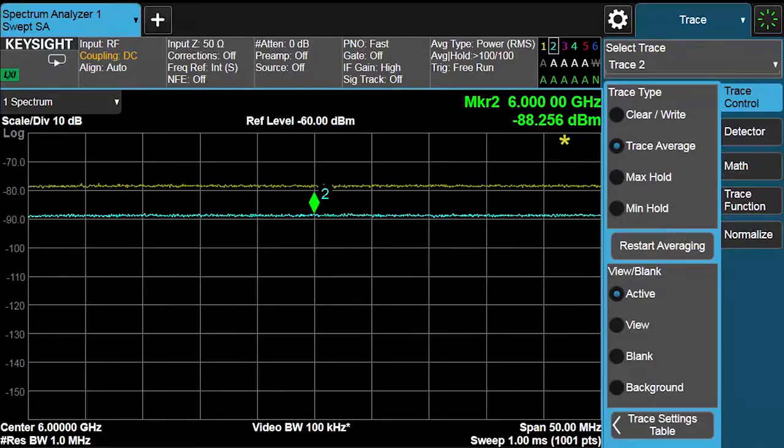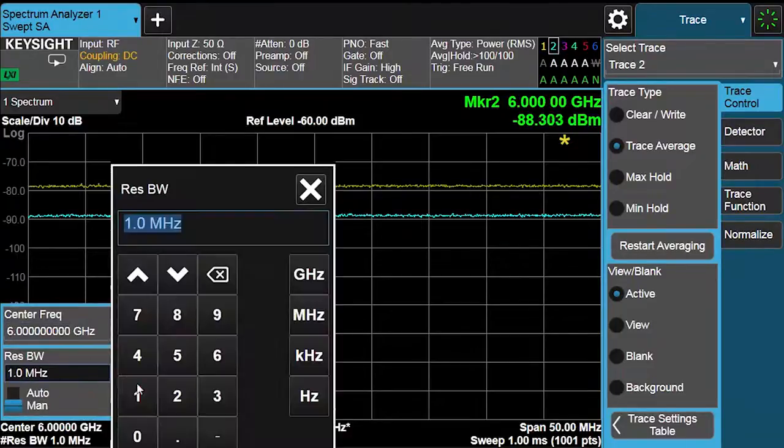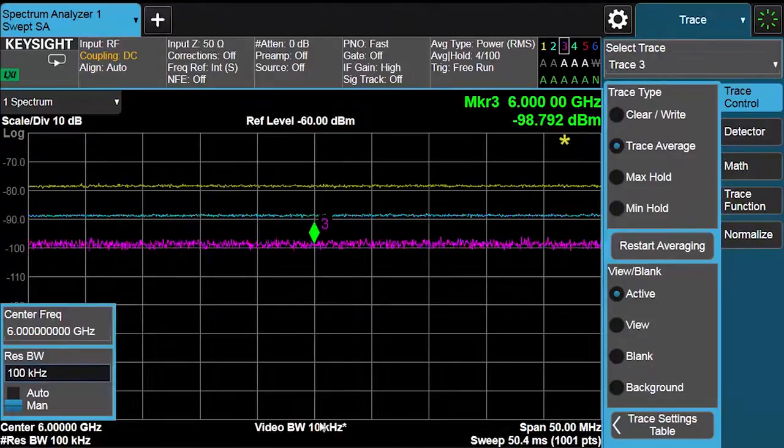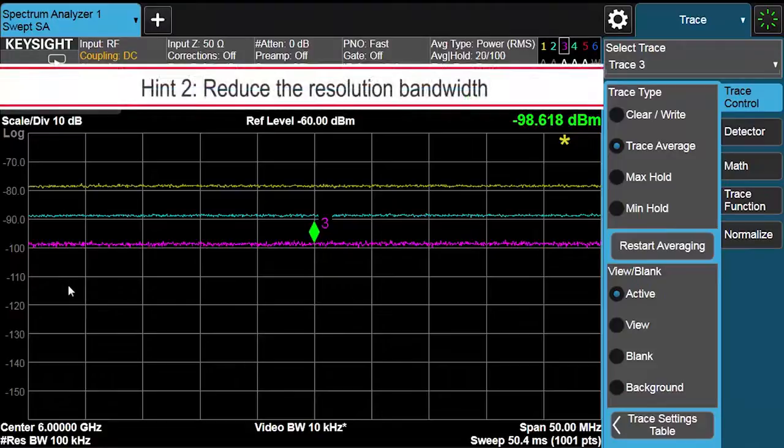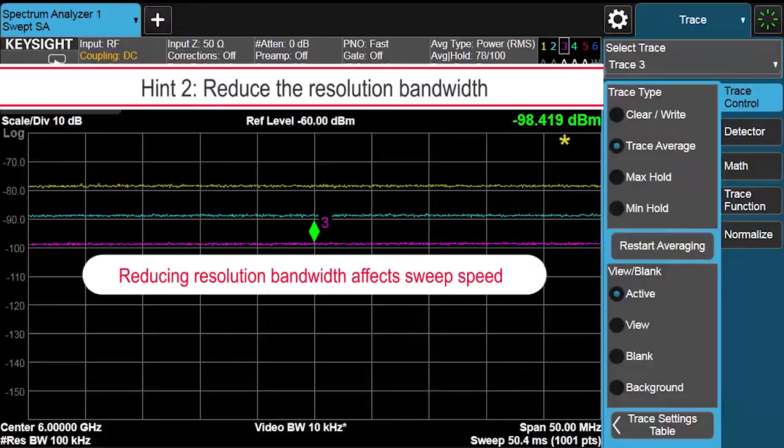So next, I'll go ahead and change the resolution bandwidth setting from 1 MHz to 100 kHz. This is a reduction by a factor of 10. And now you can notice that the noise floor has also dropped by a factor of 10. We're now sweeping at 50.4 ms versus the previous 1 ms sweep speed. So a reduction in the resolution bandwidth setting does affect your sweep speed.